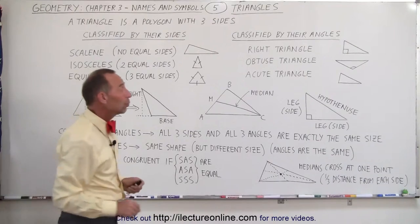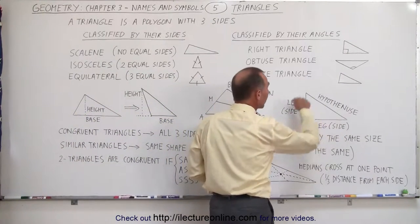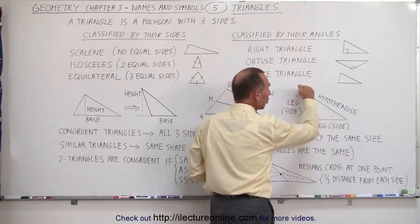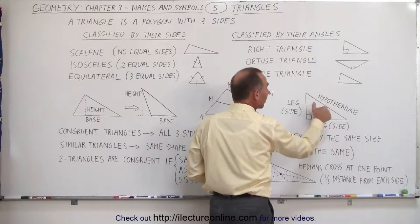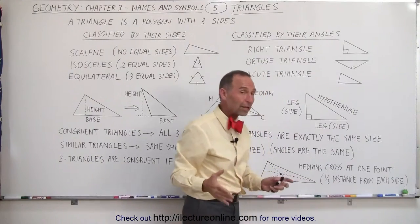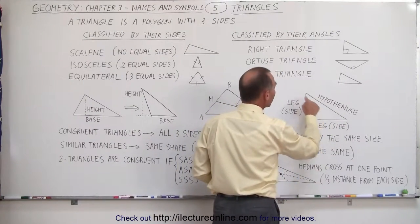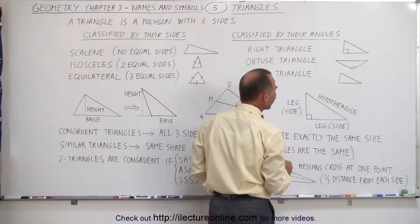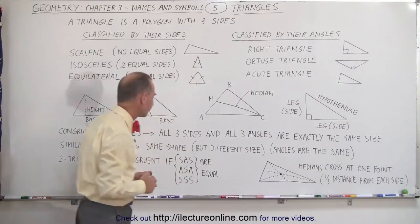Other names we should be familiar with: if we're dealing with a right triangle — meaning one of the angles is 90 degrees — the longest side, which is opposite the 90-degree angle, is called the hypotenuse. The other two sides are called the legs of the triangle, sometimes also called the sides of the triangle.